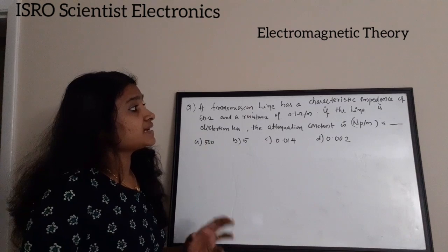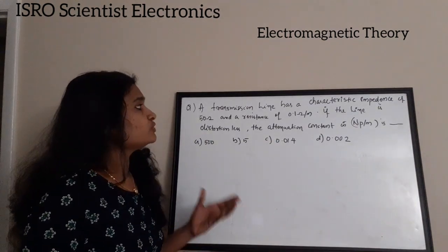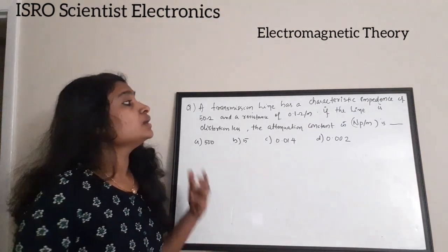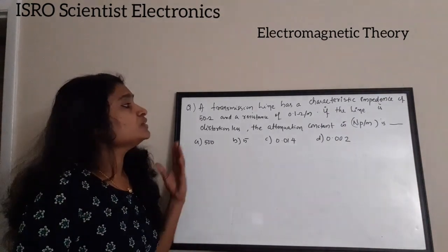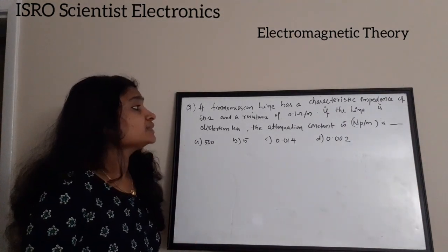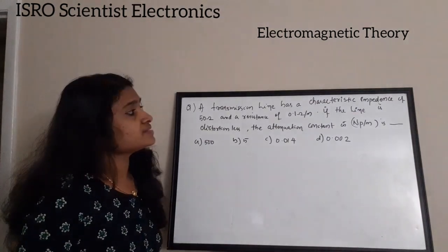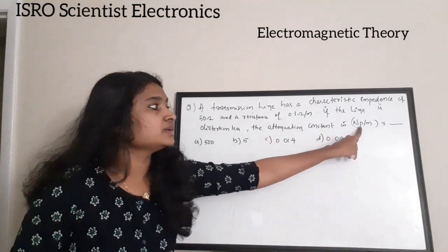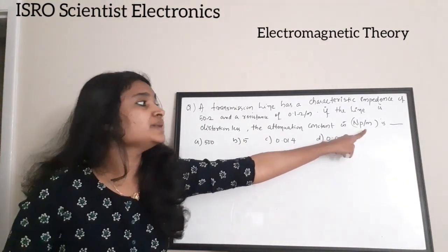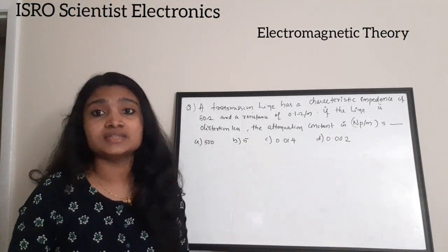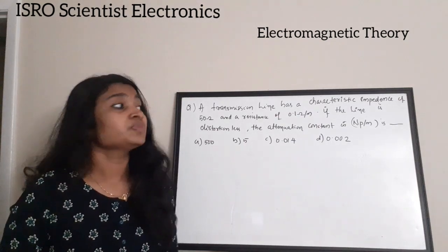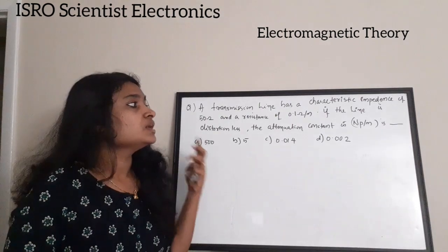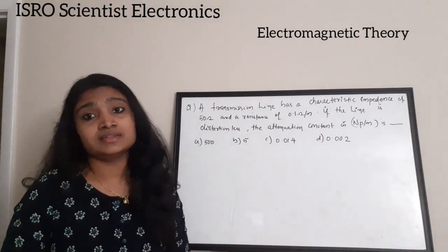A transmission line has a characteristic impedance of 50 ohms and a resistance of 0.1 ohm per meter. If the line is distortionless, then the attenuation constant in Neper per meter — note it is Neper, named after the scientist Neper, not Newton — what is the attenuation constant?